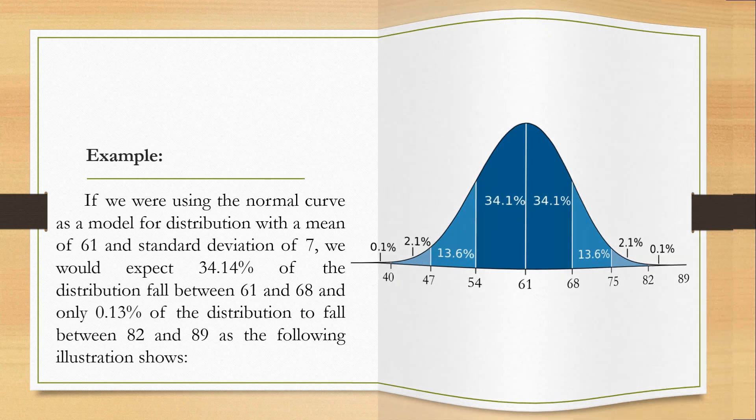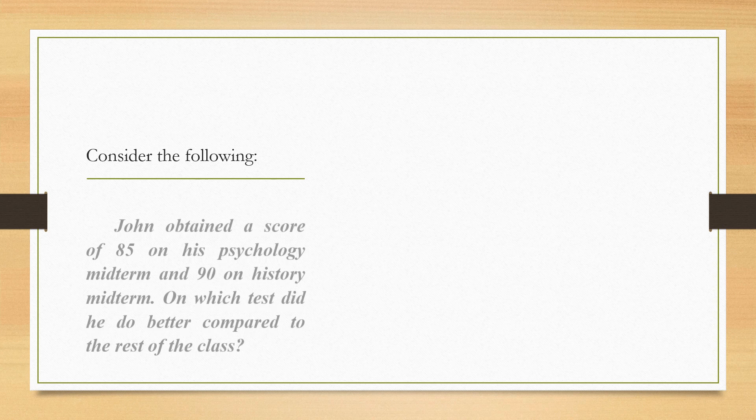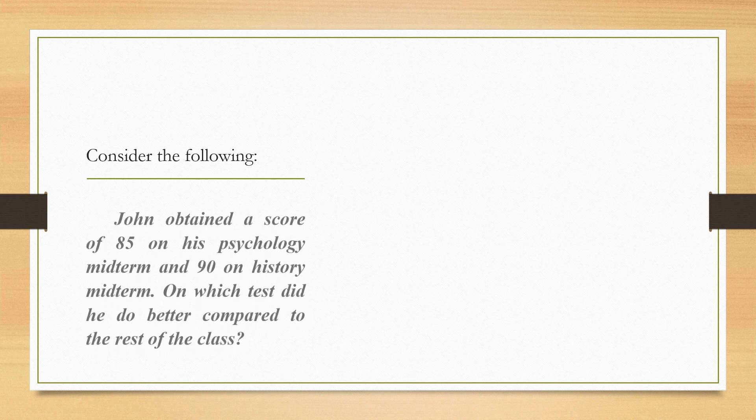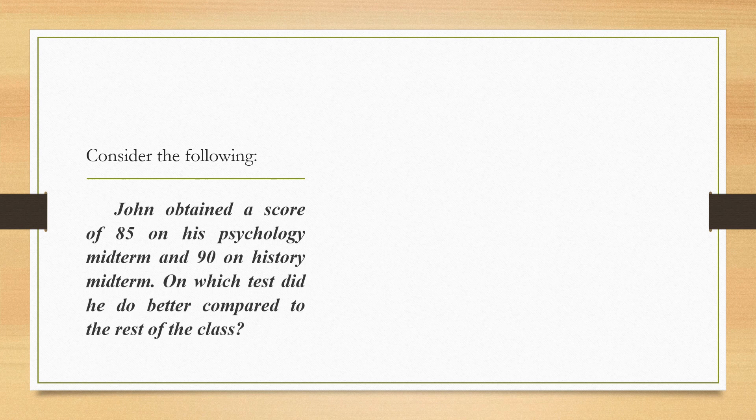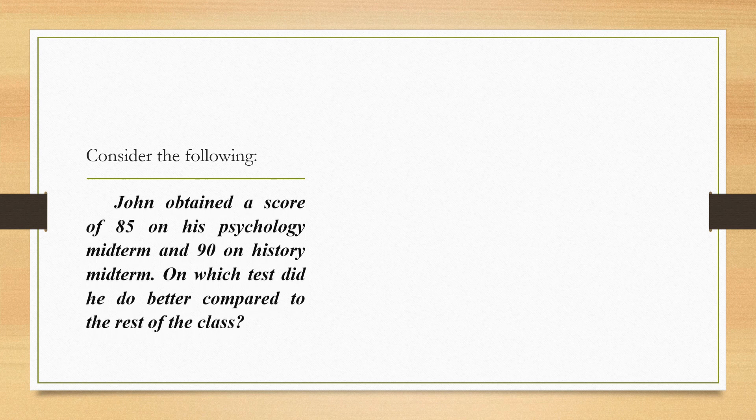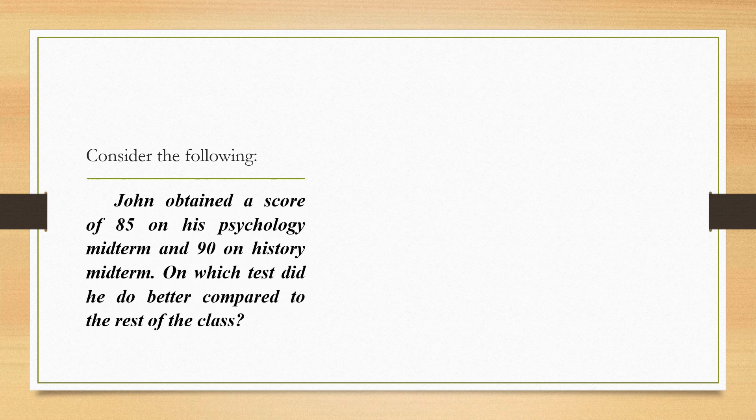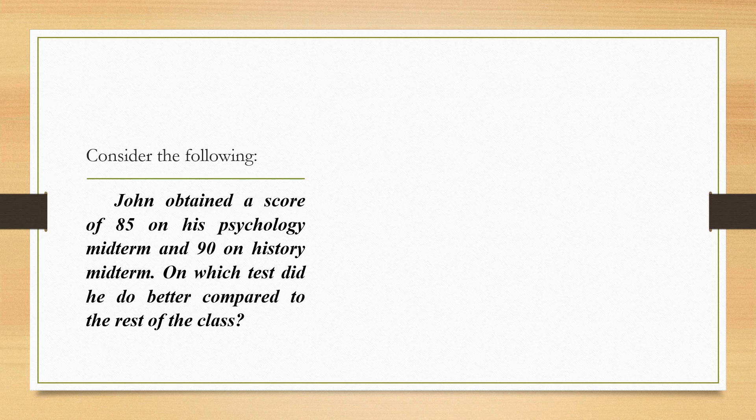Thus far, we have talked about scores that come directly from the test. These actual scores or obtained scores are called raw scores. Consider the following: Chan obtained a score of 85 on his psychology midterm and 90 on his history midterm. On which test did he do better compared to the rest of the class? At first glance, you might say he did better in history. Well, this may be true, but how do you know? How sure are you?